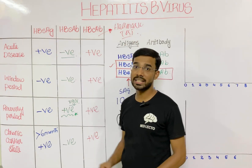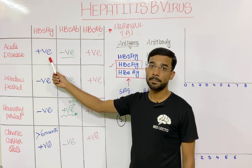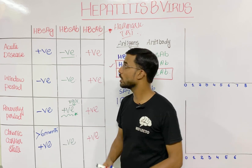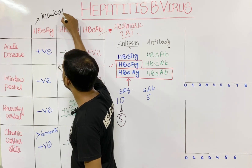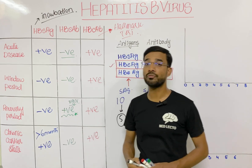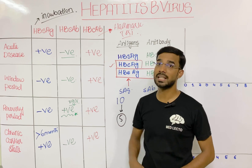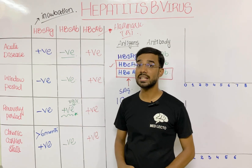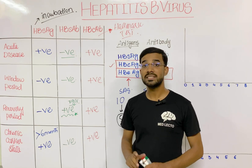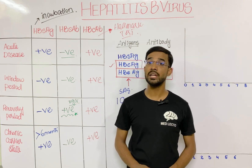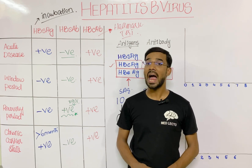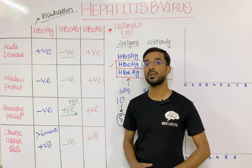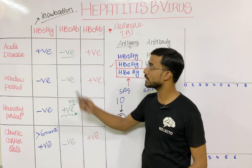Hepatitis B surface antigen can also be used in diagnosis because it becomes positive in acute disease. However, importantly, Hepatitis B surface antigen is also present in the incubation period — from exposure to the virus until the appearance of symptoms. This means a patient may have no symptoms but still have Hepatitis B surface antigen in their blood. The incubation period is actually 10 to 12 weeks, after which symptoms start appearing.